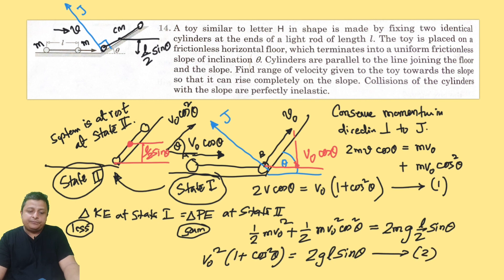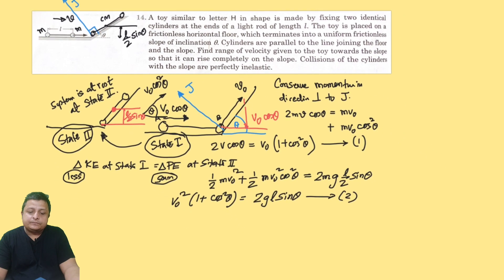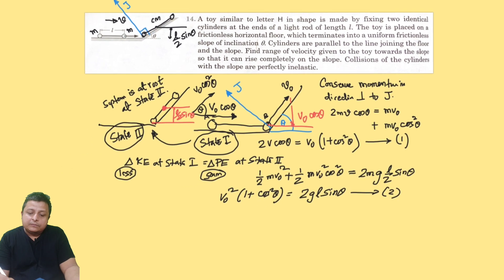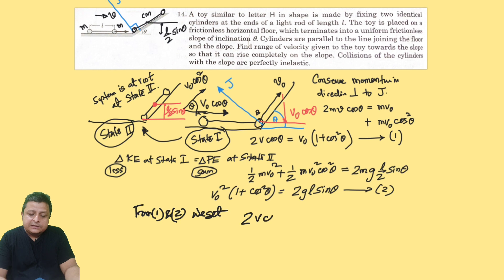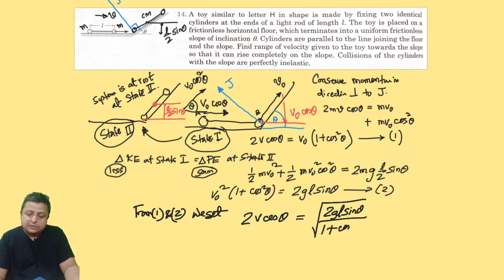Combining Equations 1 and 2: from Equation 1, 2V cos θ = v₀(1 + cos² θ), and from Equation 2, v₀ = √[2gL sin θ / (1 + cos² θ)]. Substituting gives the final expression for v in terms of g, L, and θ.